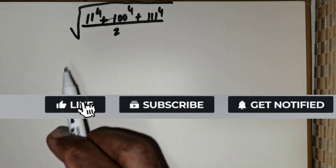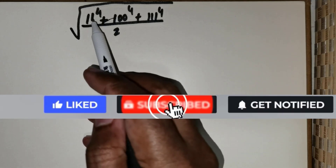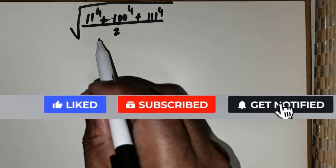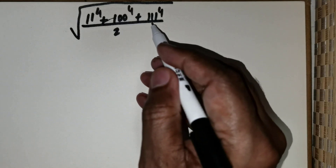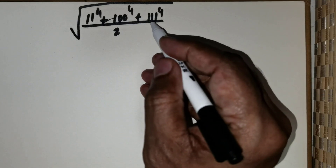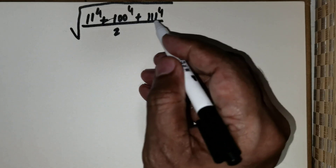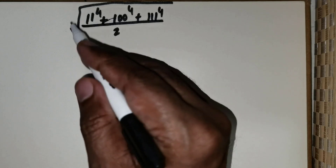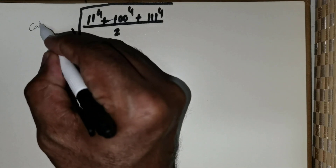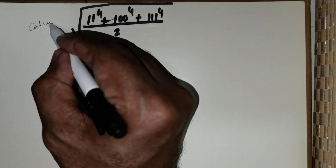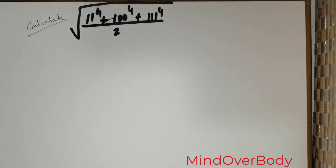Welcome students. We are given this question: square root of 11 raised to the power 4, positive 100 raised to the power 4, positive 111 raised to the power 4, divided by 2. We are expected to calculate the value.